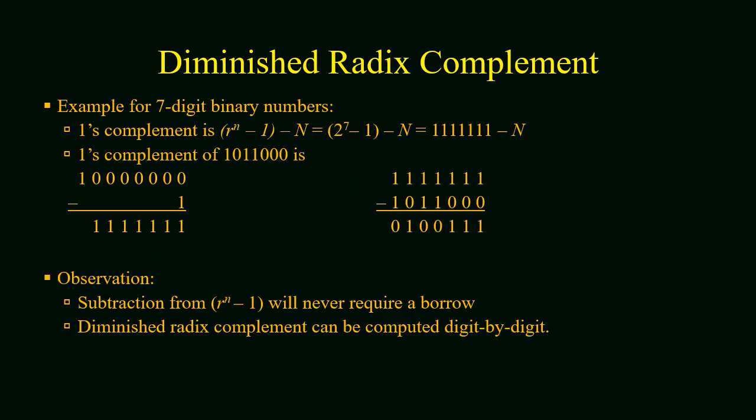Now we have another example from binary number system. The base of binary is 2, so the diminished radix complement will be 1's complement. If we have a 7-digit binary number, the diminished radix complement will be (r^n - 1) - N, or (2^7 - 1) - N. Let the given 7-digit binary number be 1011000.